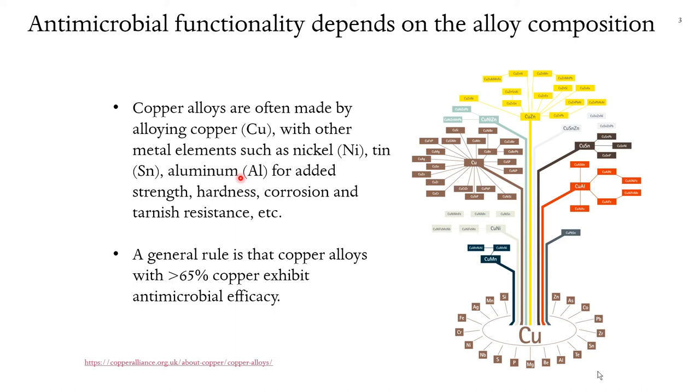and aluminum are added to copper to enhance its strength, hardness, corrosion, and tarnish resistance. In order for copper to obtain the antimicrobial functionality, a rule of thumb is that this alloy needs to contain more than 65 weight percent of copper.